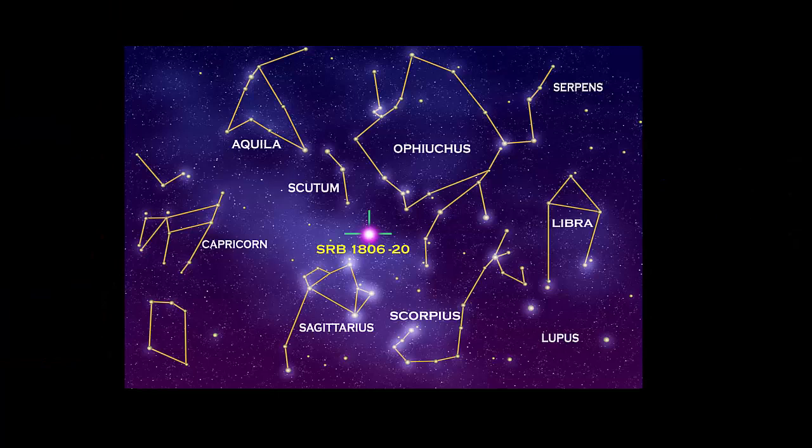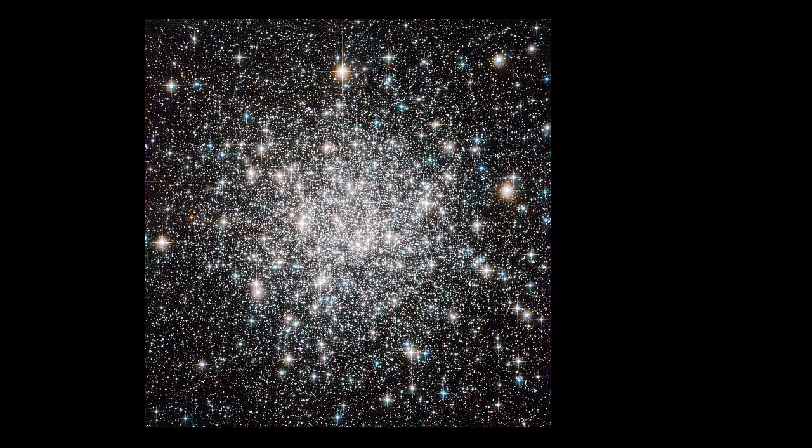A constellation is a pattern of stars that appear close together when viewed from Earth although they are not necessarily close to each other in space. Stellar clusters are groups of stars. Open clusters contain around a thousand younger stars whereas globular clusters contain up to around a hundred thousand much older stars.